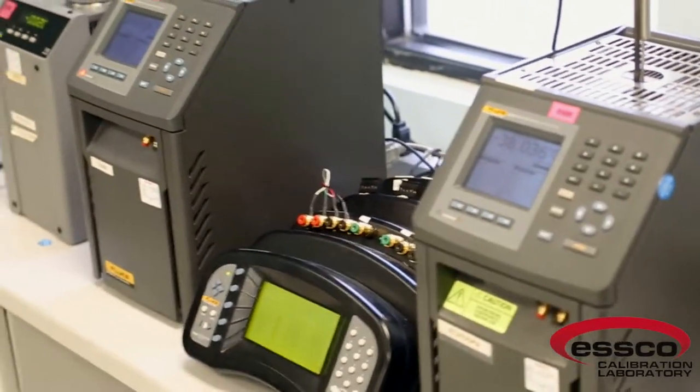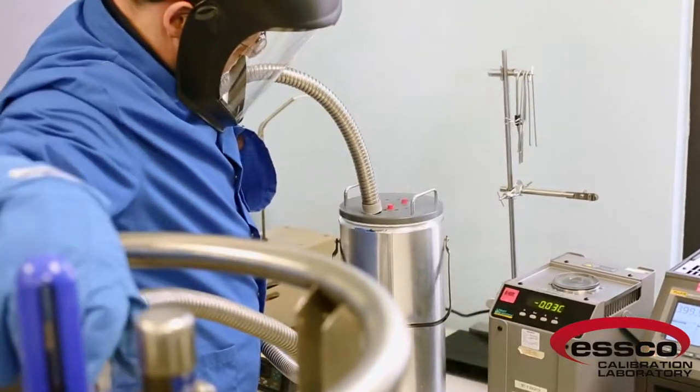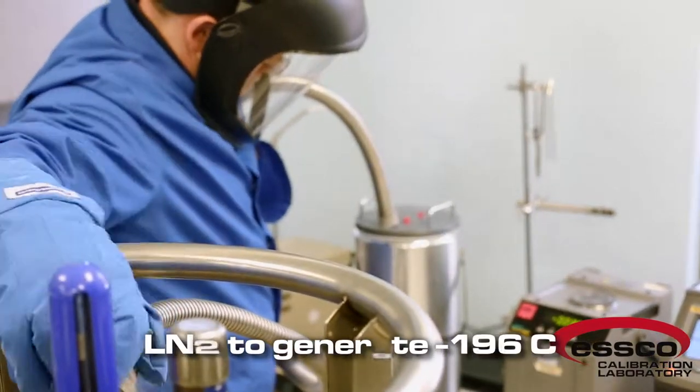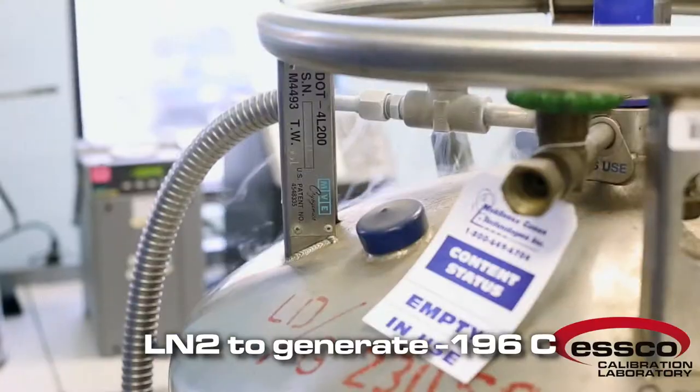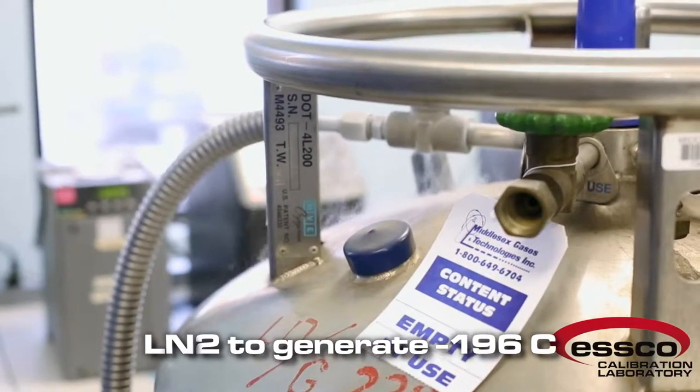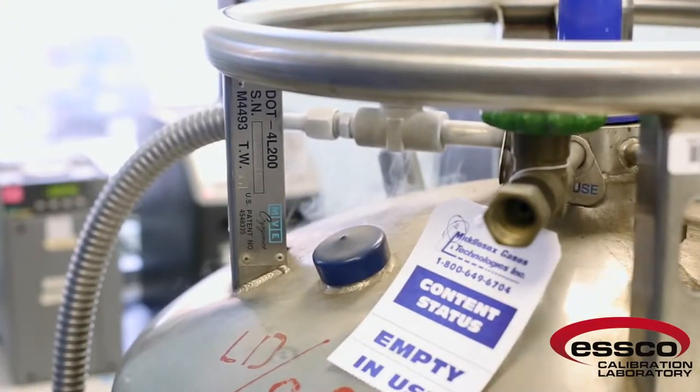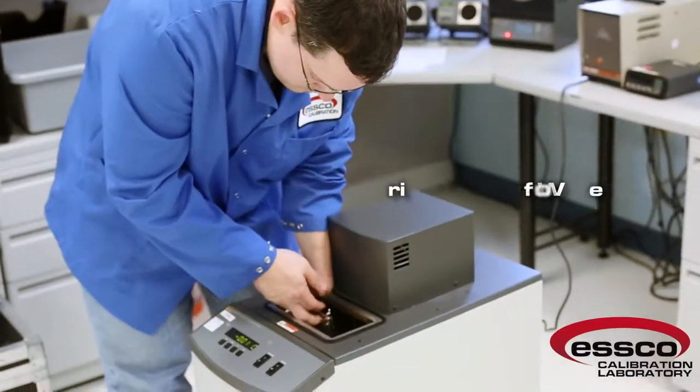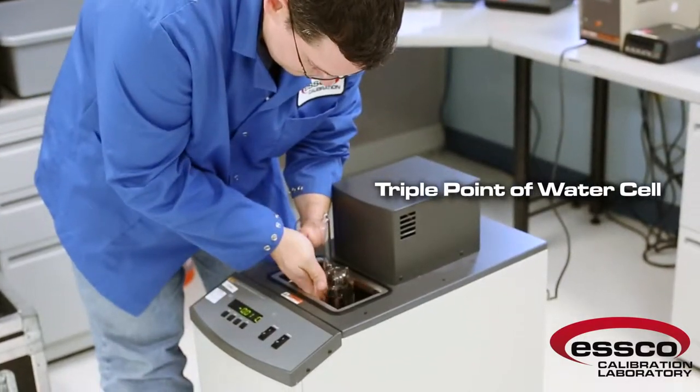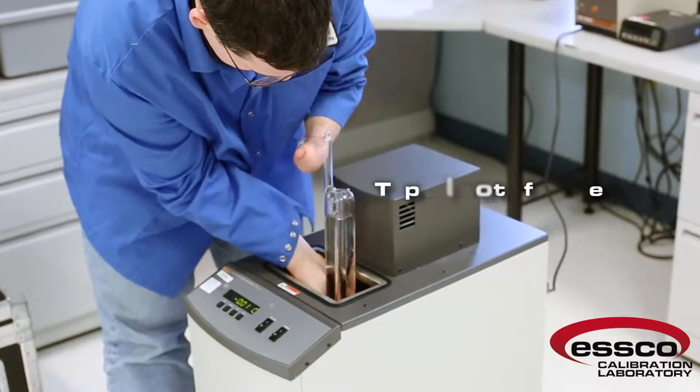Using the same standards, we also calibrate thermocouples through their effective range, or between minus 196 to 600 degrees C. We offer accredited calibrations for type J, K, and T thermocouples, and our uncertainties range from 40 to 225 mK.